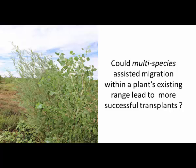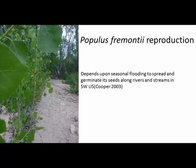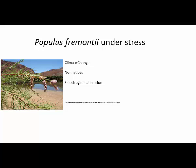Specifically, we're asking: could multi-species assisted migration within a plant's existing range lead to more successful transplants? Our target species was Populus fremontii — a foundation species in southwestern riparian ecosystems that provides ecosystem services and supports many other species. It reproduces primarily by using seasonal flooding, is extremely dependent on water, and is under stress from climate change, non-native introductions, and flood regime alteration. This study focuses primarily on climate change.